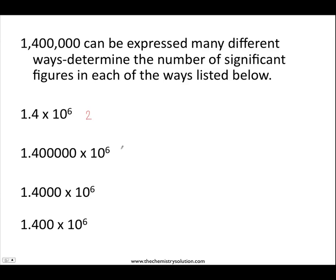In the next example, I want to show that all of the zeros in 1,400,000 are significant, so I've written this number in scientific notation including all of the zeros. Because any zero to the right of a number with a decimal point is significant, this figure has seven significant figures.